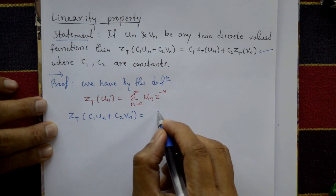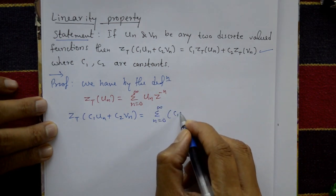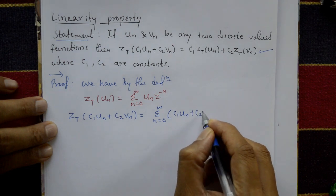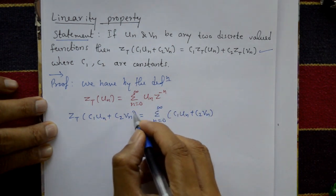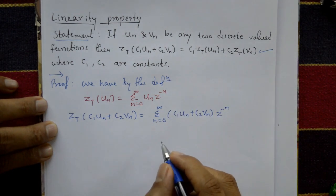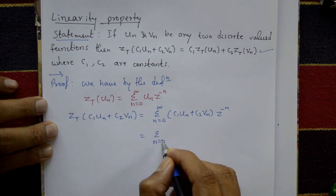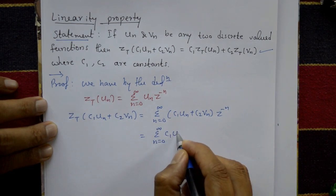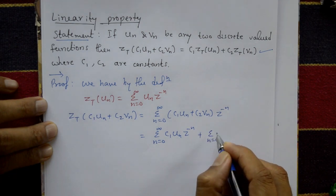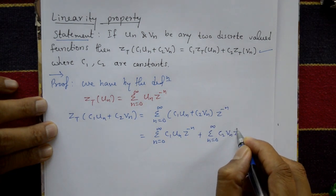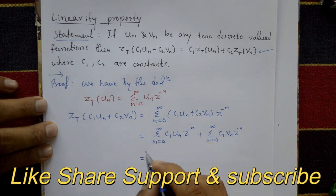Using the definition, this equals the summation from n=0 to infinity of [c1·u(n) + c2·phi(n)]·z^(−n). Separating the terms, this becomes the summation from n=0 to infinity of c1·u(n)·z^(−n) plus the summation from n=0 to infinity of c2·phi(n)·z^(−n). Since c1 and c2 are constants, they can be taken outside the summations.